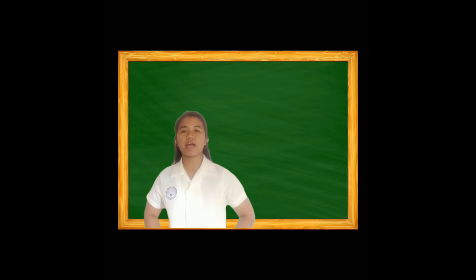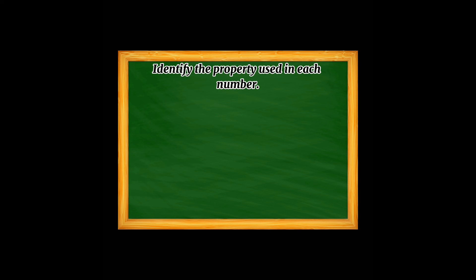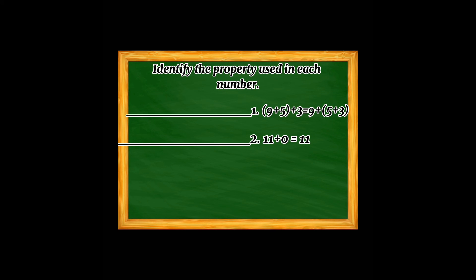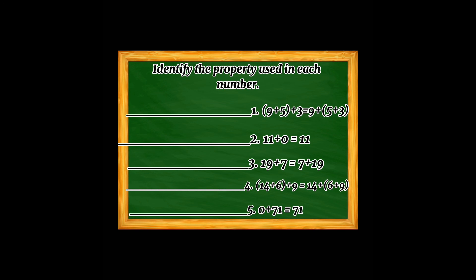Sukatin natin ang inyong mga natutunan sa ating arali. Maglabas ng isang malinis na papel. Identify the property used in each number. Number 1: 9 plus (5 plus 3) equals (9 plus 5) plus 3. Number 2: 11 plus 0 equals 11. Number 3: 19 plus 7 equals 7 plus 19. Number 4: 14 plus (6 plus 9) equals (14 plus 6) plus 9. Number 5: 0 plus 71 equals 71.